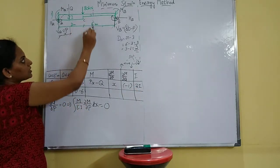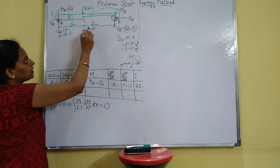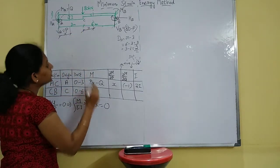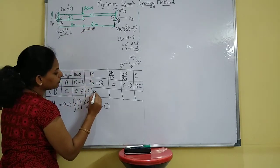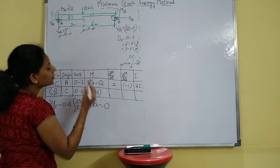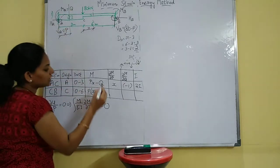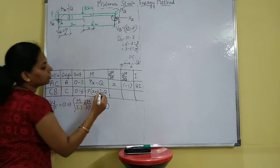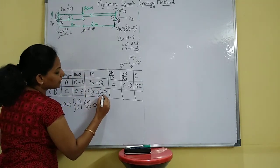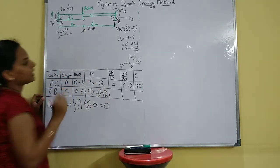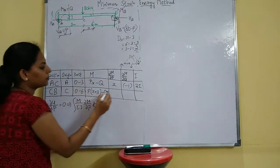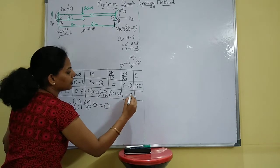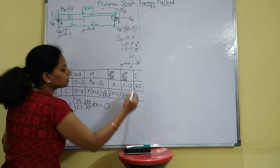Next, coming to section CB, mark it as X. You have P into (X + 3), minus Q, and here 80 kilonewton acts downward, so minus 80 into X. Therefore ∂M/∂P = X + 3, and ∂M/∂Q = −1. Here the variation is EI itself.